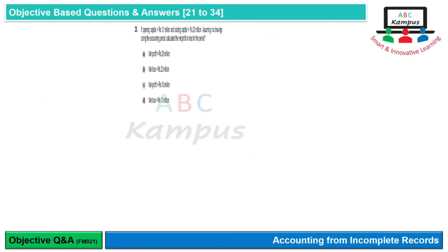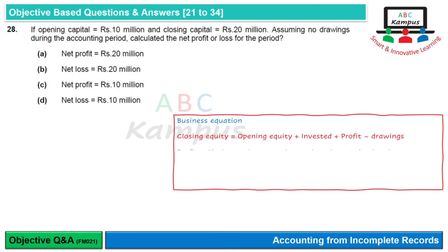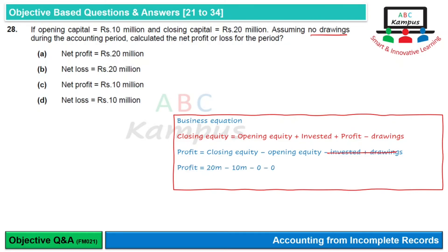Question 28: If opening capital is Rs. 10 million and closing capital is Rs. 20 million, assuming no drawings during the accounting period, calculate the net profit or loss for the period। Business equation से: profit = closing equity − opening equity। Invested और drawings दोनों 0 हैं। तो profit = 20 million − 10 million = 10 million profit। तो option C is correct।